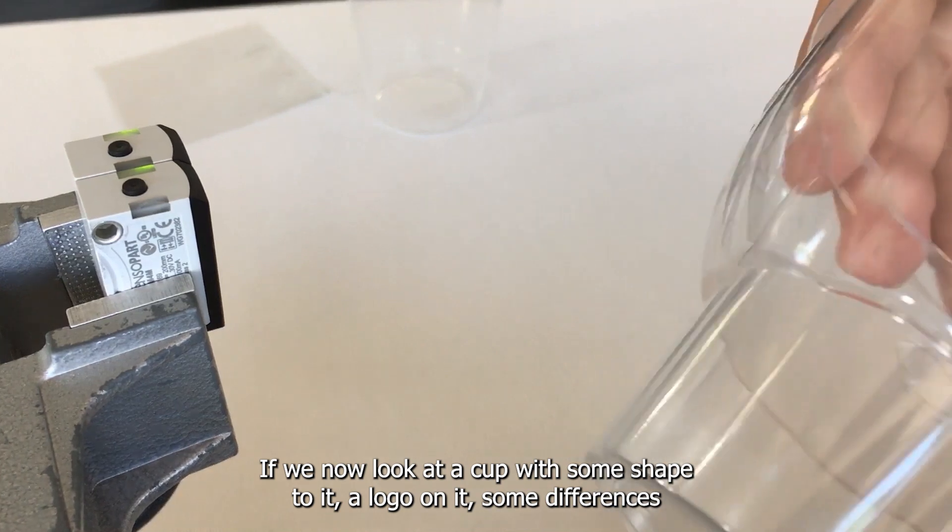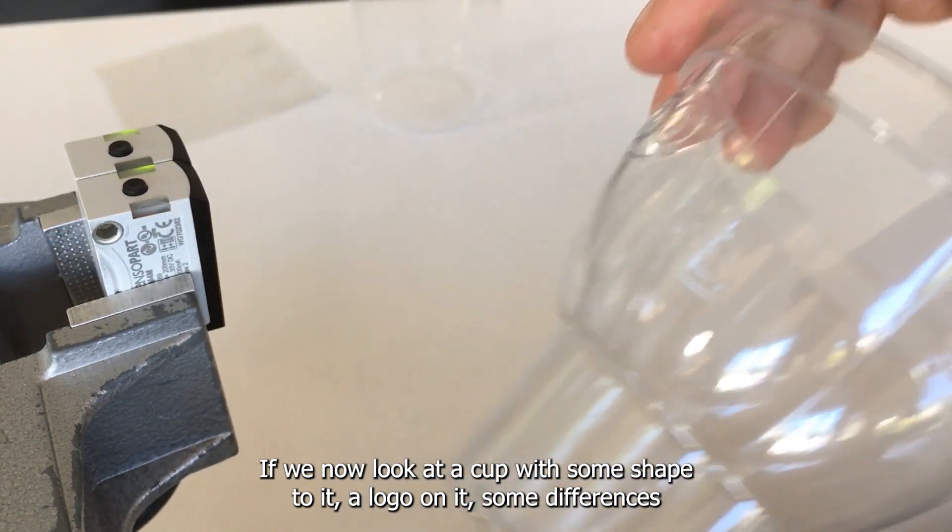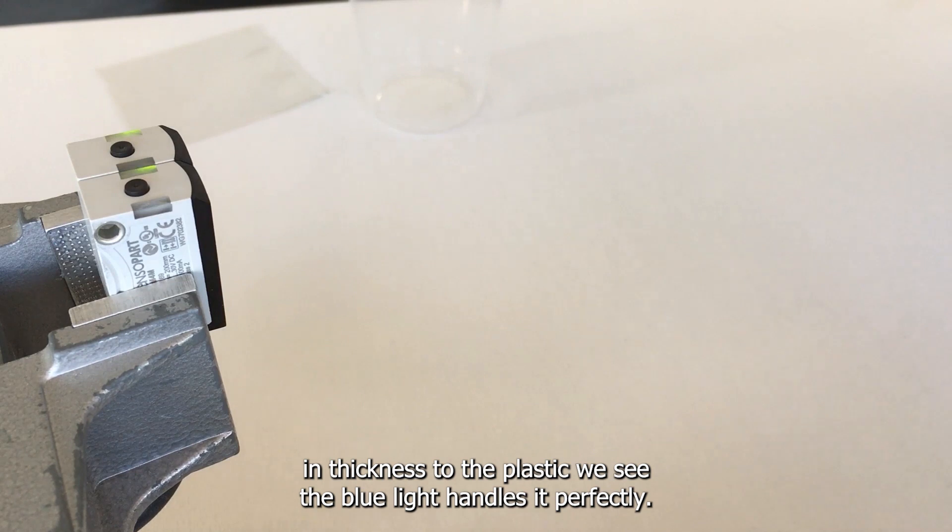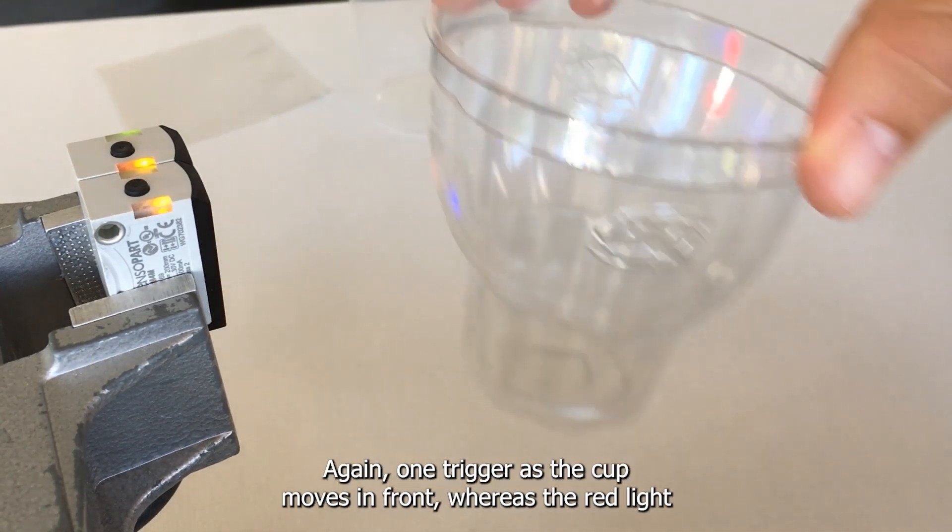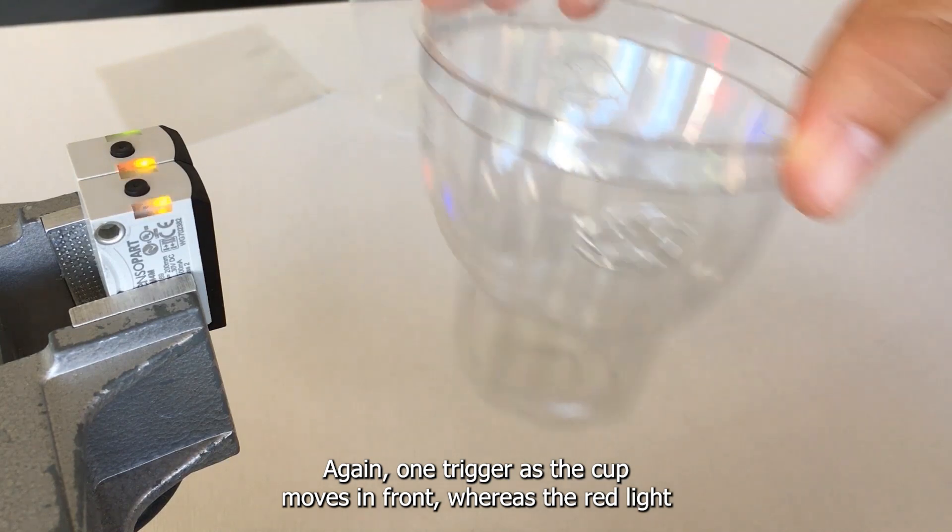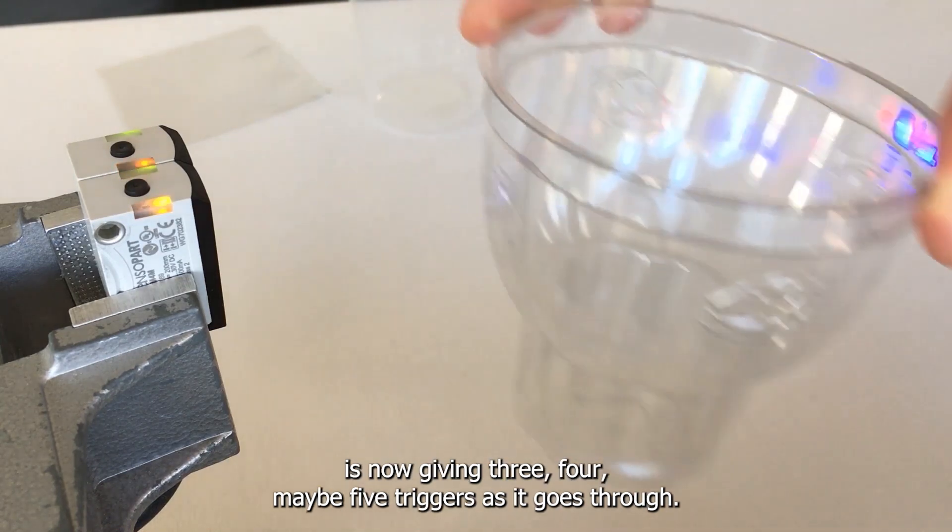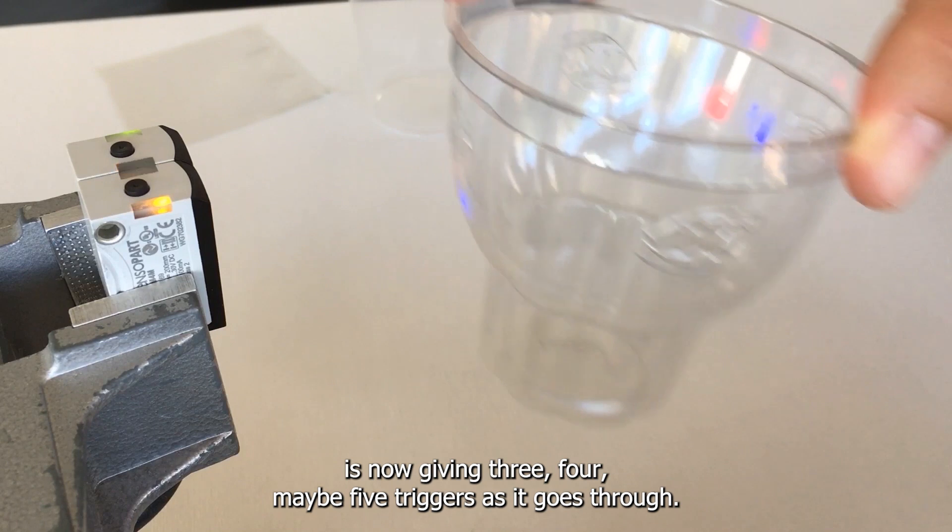If we now look at a cup with some shape to it, a logo on it, some differences in thickness to the plastic, we see the blue light handles it perfectly - again one trigger as the cup moves in front, whereas the red light is now giving three, four, maybe five triggers as it goes through.